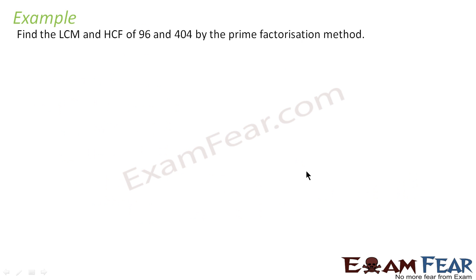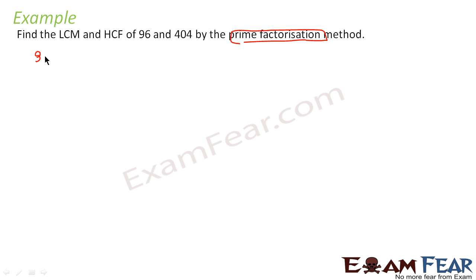Let's take one more example. Here we have to find the LCM and HCF of 96 and 404 by the prime factorization method — we are not using Euclid's lemma here. So what we will do is factorize each number. Let's factorize 96.